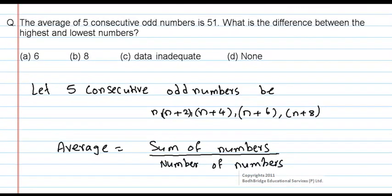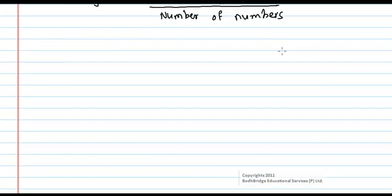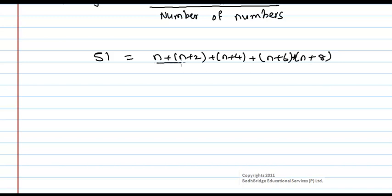Here, given the average of those five consecutive odd numbers, that is 51. This equals n plus n plus 2 plus n plus 4 plus n plus 6 plus n plus 8, divided by 5.